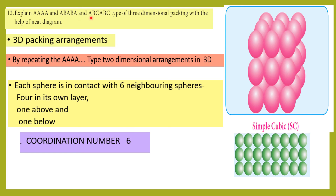Explaining close packing arrangements: In the AAA arrangement, spheres are arranged in a layer and each sphere is in contact with 6 neighboring spheres — 4 in the same layer, 1 above, and 1 below. So the coordination number for AAA arrangement (simple cubic) is 6.